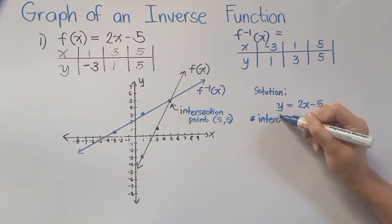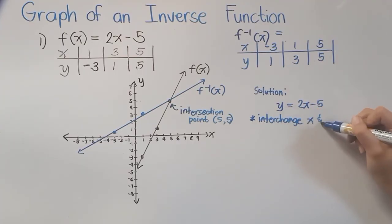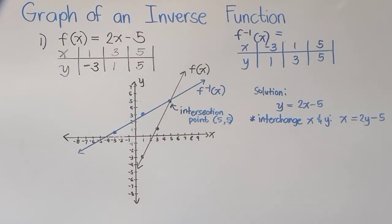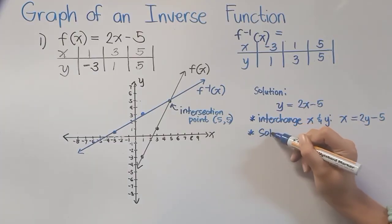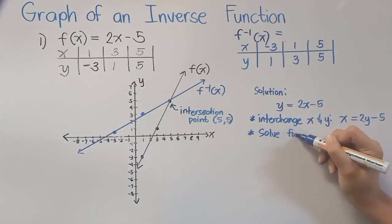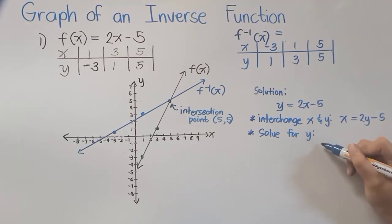Interchange x and y. That means to say all of our y will become x and our x will become y. So we have here y, it will be written as x, and then copy 2y minus 5. And the next step is to solve for y. So we have to isolate y on one side. That means we have to transpose negative 5 to the left side. From negative 5, it will become positive 5 is equal to 2y.